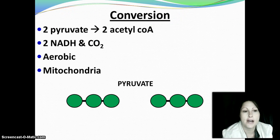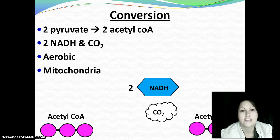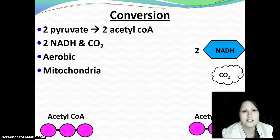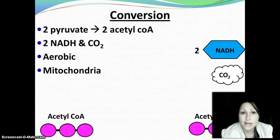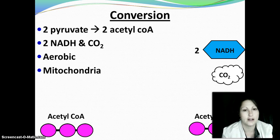Our next step is conversion. That pyruvate that we just made is going to turn into two acetyl-CoA. During this step, you're going to generate two more of those little shopping carts — the NADHs — and carbon dioxide, which is our gaseous waste product. It's an aerobic step, so it requires oxygen, and if it's aerobic, it has to be in the mitochondria.